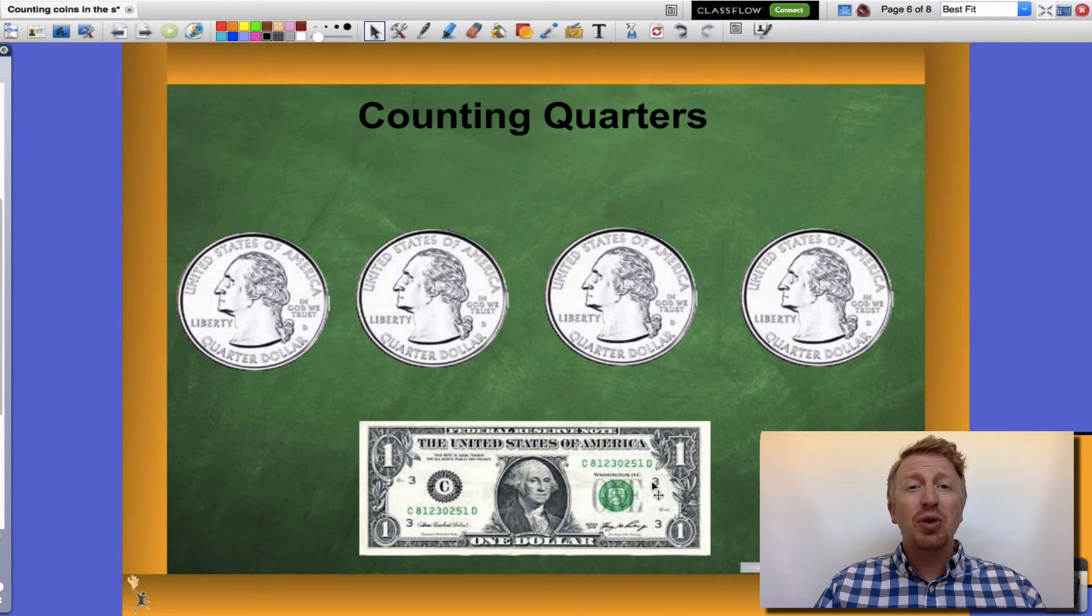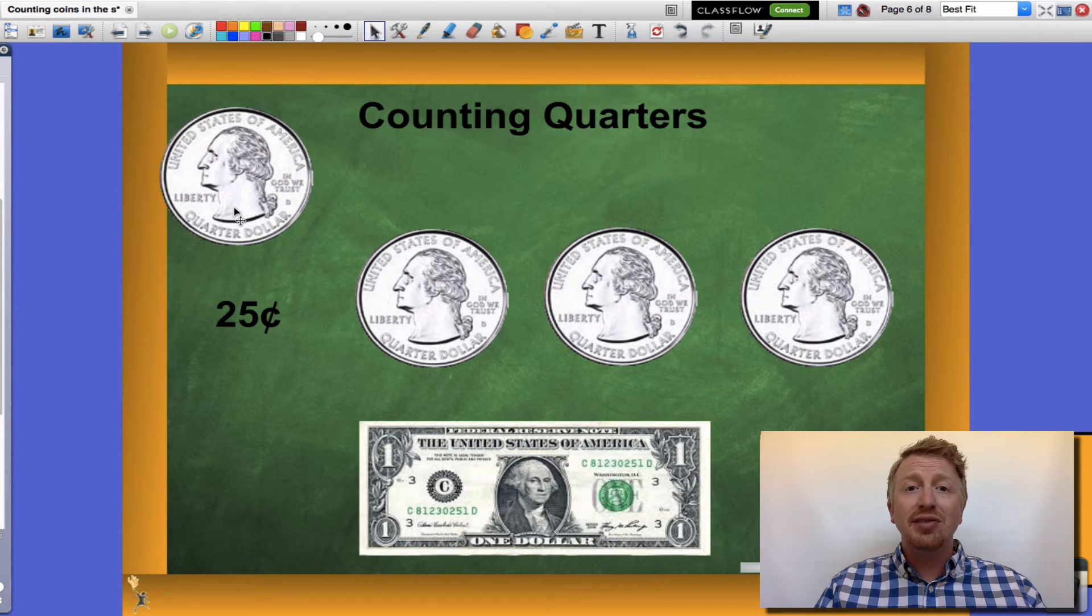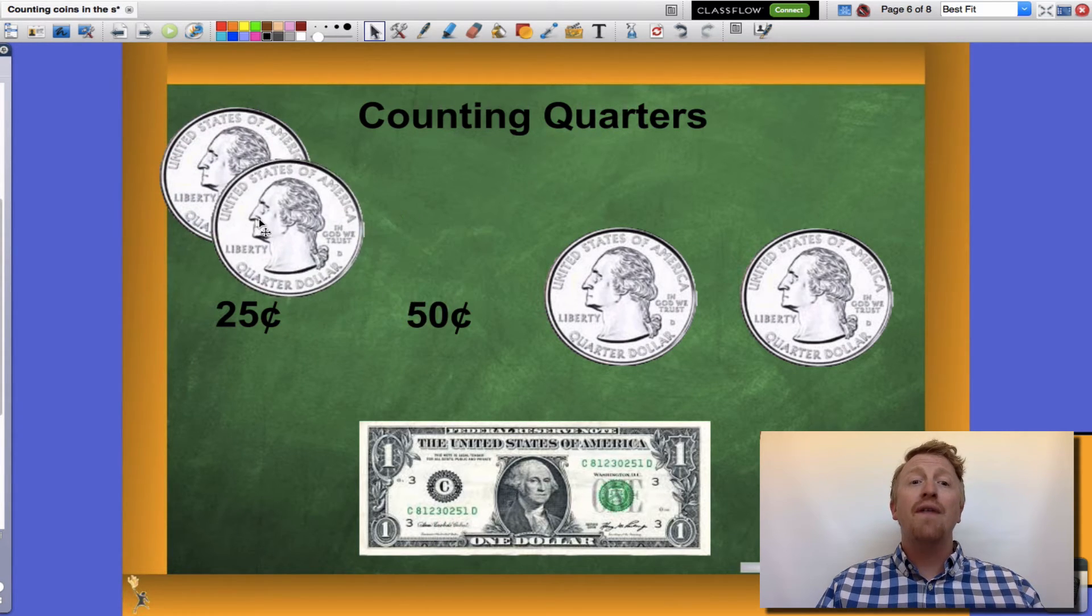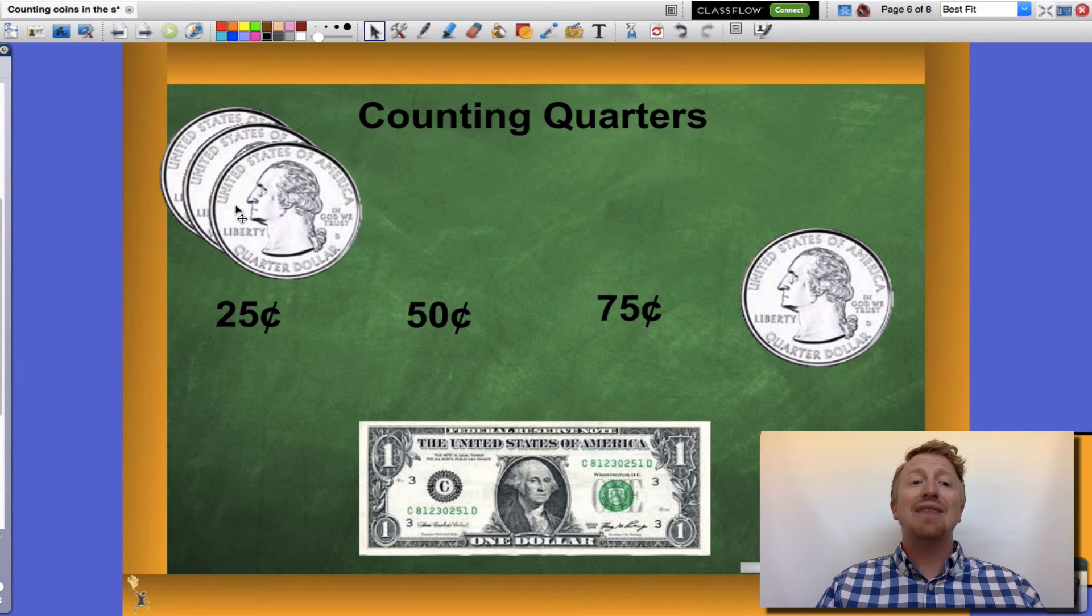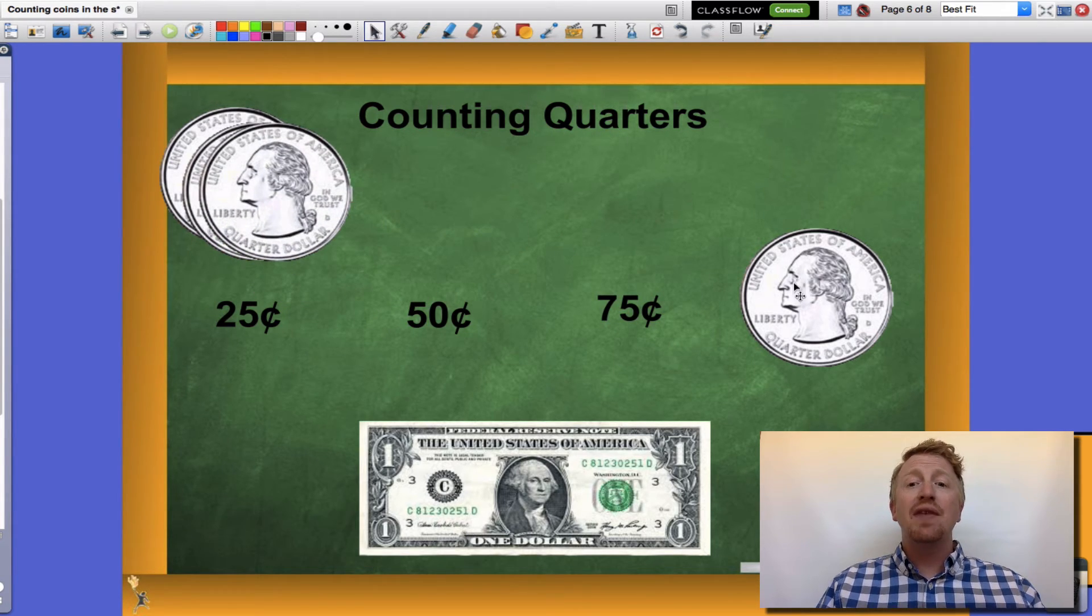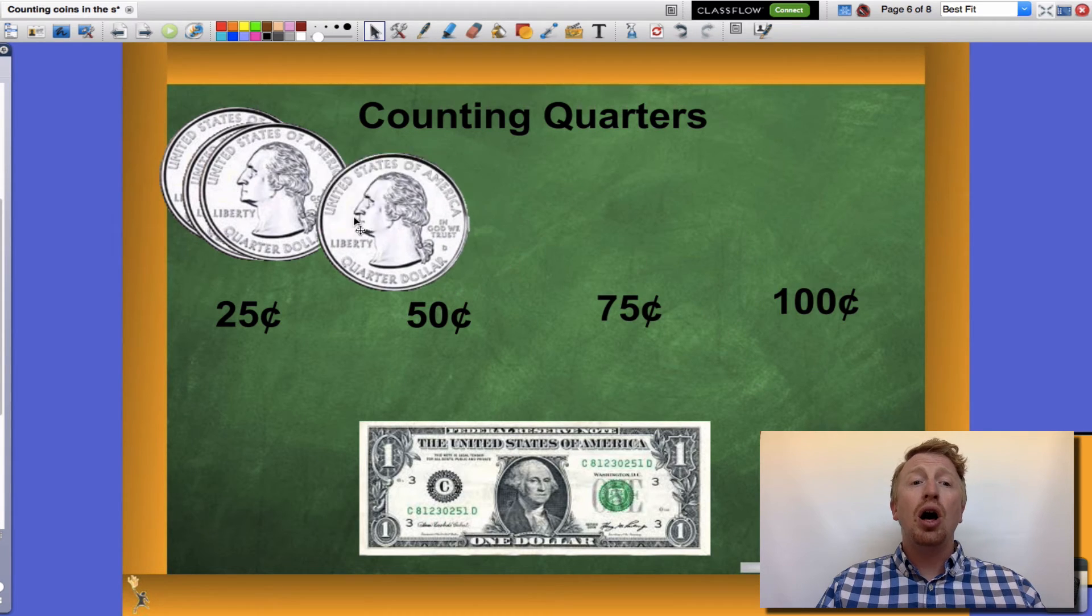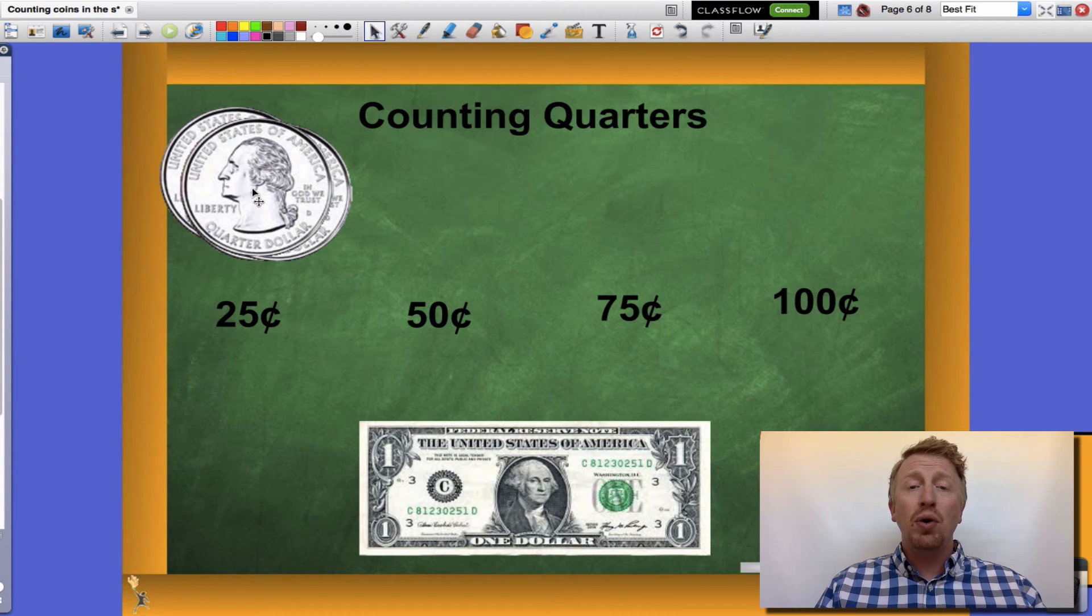Let's give it a try even though it's tough. One quarter is twenty-five cents. Two quarters are fifty cents. Three quarters would be seventy-five cents. And four quarters would equal a hundred cents. Four quarters are equal to one hundred cents or one whole dollar.